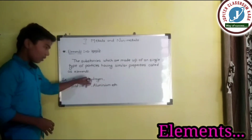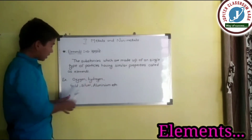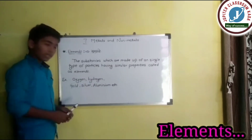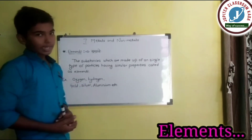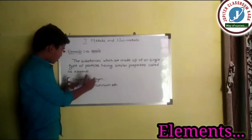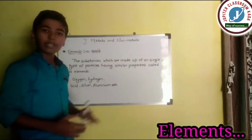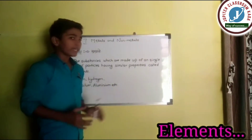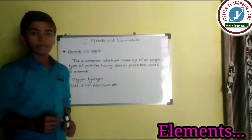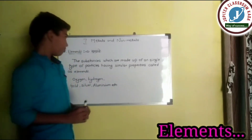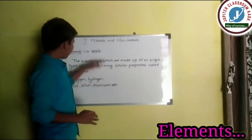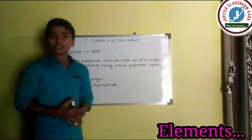Examples: oxygen, hydrogen, gold, silver, aluminium, etc. These substances like oxygen, hydrogen, gold, silver, aluminium — they are all made up of a single type of particles, and that is why they are called elements.